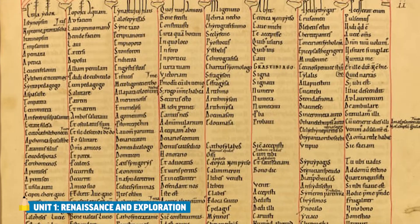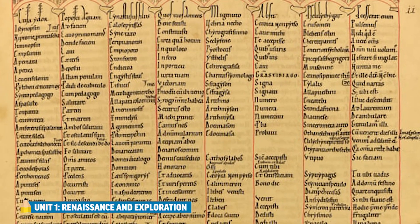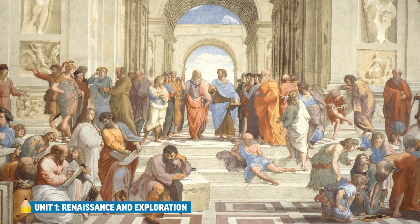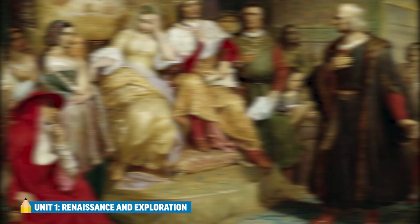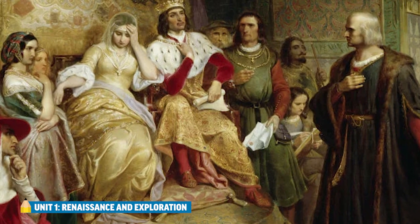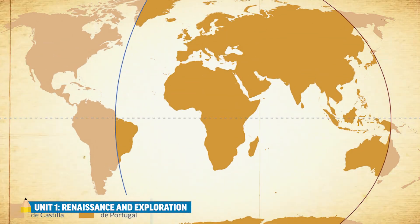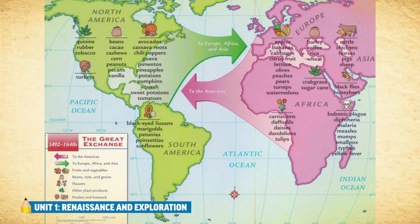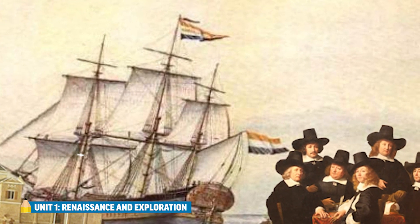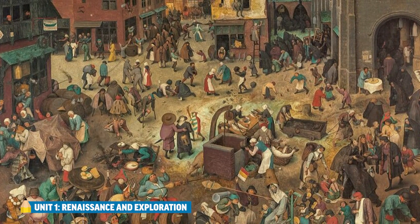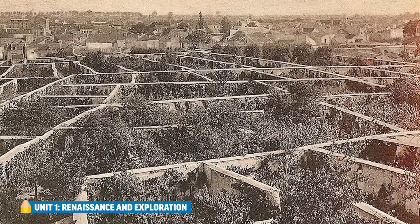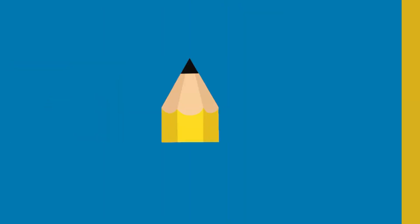To wrap it all up: culturally, Europe undergoes immense changes as a result of the reacquisition of Greek and Roman texts, which spurs humanist and secular thought — rather than solely focusing on theology, humanists explore new diverse academic interests. Politically, new monarchs gain and consolidate power with help from the wealth of their new world colonies, and competition to control trade leads to conflict among European states. Economically, the hemispheres are connected, leading to a massive increase in resources and money for those who control trade; new economic elites emerge and Europe marches toward a capitalistic economic system. Socially, the population reaches its pre-plague levels; most Europeans still rely on agriculture and manor or village life; the commercial revolution and enclosure movements in Western Europe lead to urbanization, while in Eastern Europe serfdom is codified.